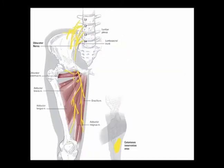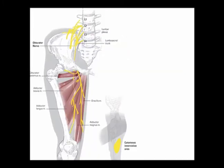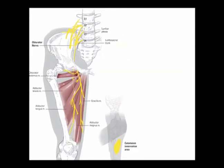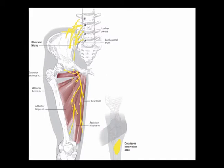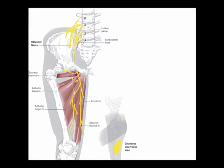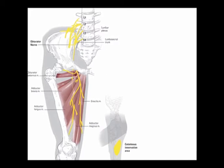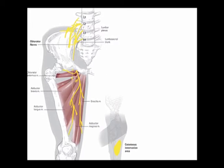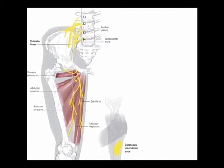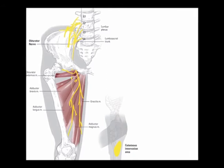The obturator nerve provides sensory and motor innervation to the medial thigh. The sensory innervation to the medial thigh is via the terminal branch of the anterior division.